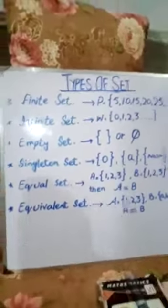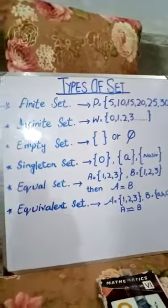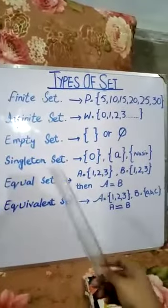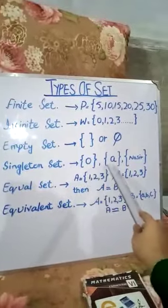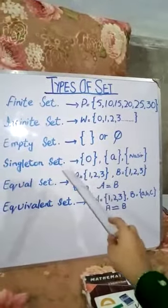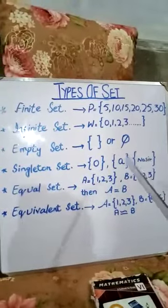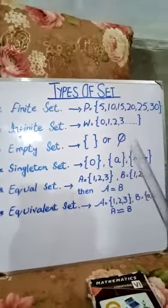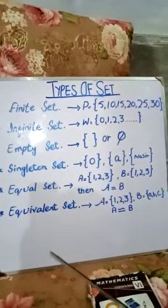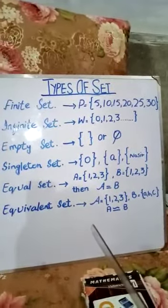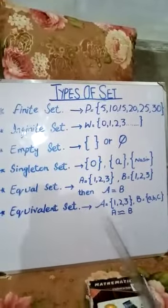All these are examples of infinite sets. Now we will discuss singleton set. A set having only one element is called a singleton set. For example, {0}, {A}, and {Nasser}. We have also more examples: the set of the recent president of Pakistan, and the set of the sun in our solar system. All of these sets have only one element, so these sets are called singleton sets.